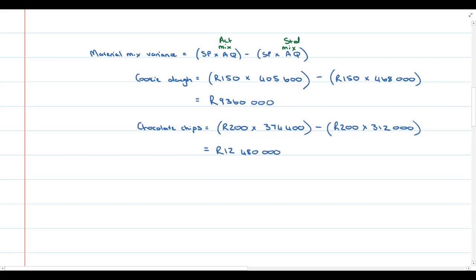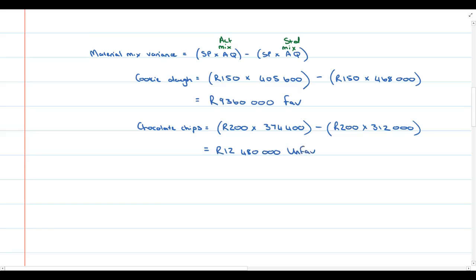For the mix variance results: cookie dough — they should have input 468,000 kg according to the standard mix, but they actually input less, so this variance is favorable. For chocolate chips — they should have input 312,000 kg but they actually input more, so this variance is unfavorable. Again, since we don't know the mark plan, if you have time, calculate the total mix variance — just in case there is a mark for it on the suggested solution.